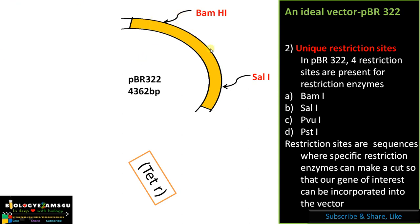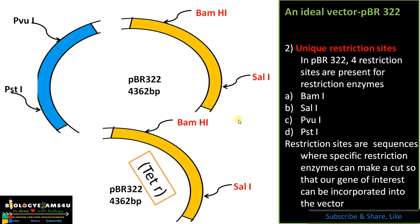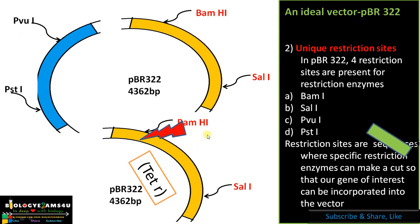Point number two: restriction sites are always within the selectable marker regions. As you can see in the tetracycline gene sequence, there are restriction sites for BamHI and BstI. In this experiment, we are introducing our gene of interest into the tetracycline gene region using the BamHI restriction enzyme, making a cut at that site.